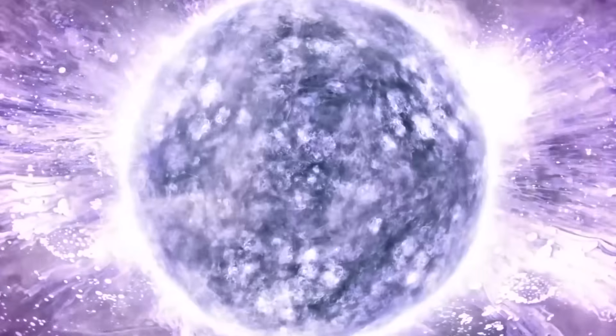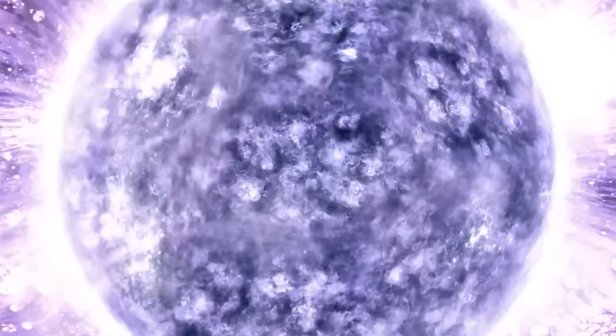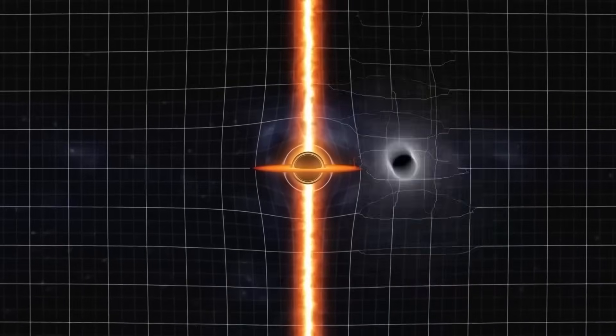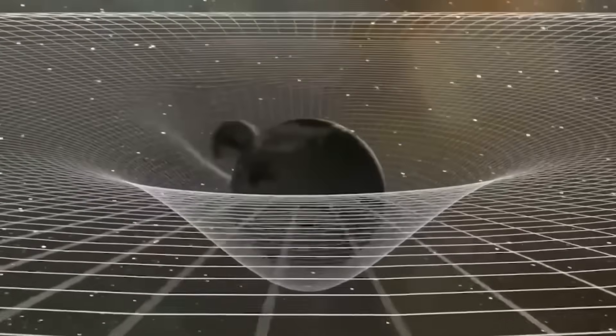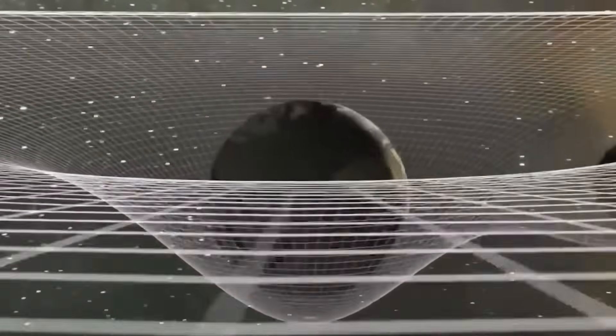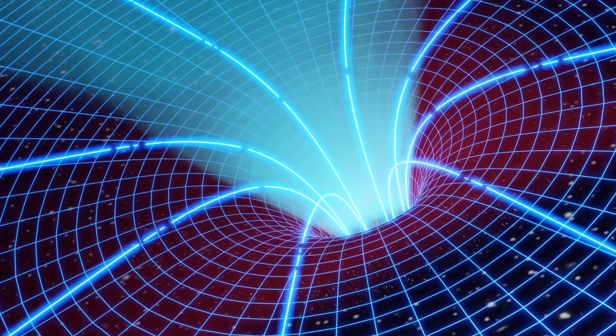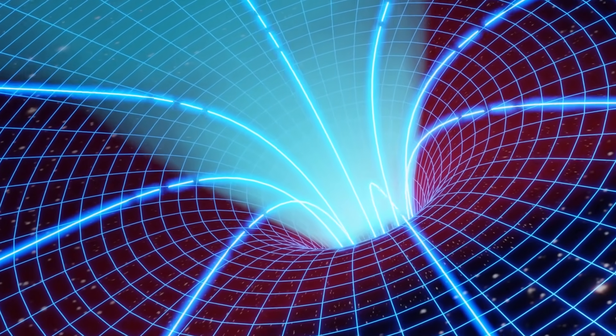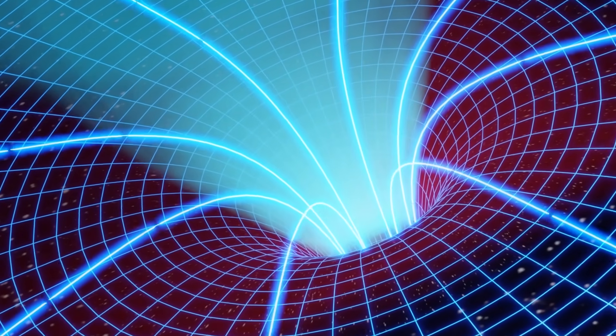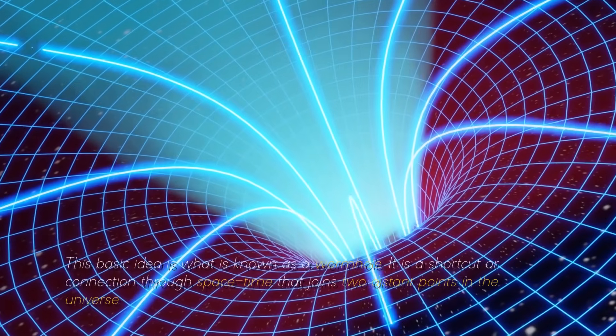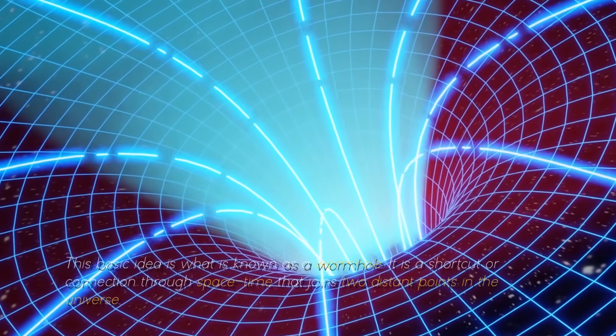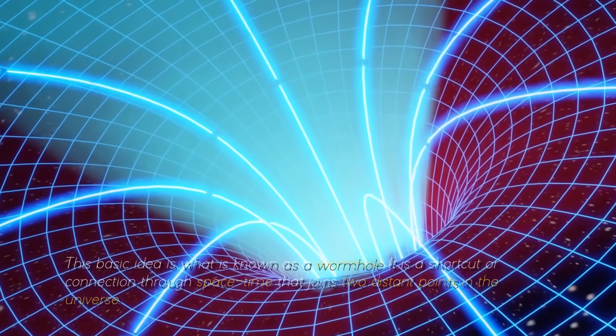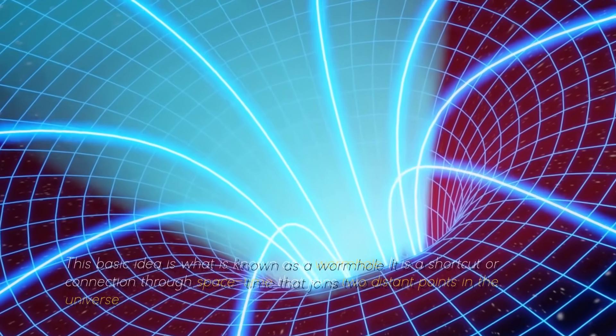To visualize this, we can imagine a sheet of paper representing space-time. If we place two points onto the paper and draw a line between them, we are representing how objects move through space-time. Now, let's consider folding the paper in half and creating a shortcut between those two points. This basic idea is what is known as a wormhole. It is a shortcut or connection through space-time that joins two distant points in the universe.